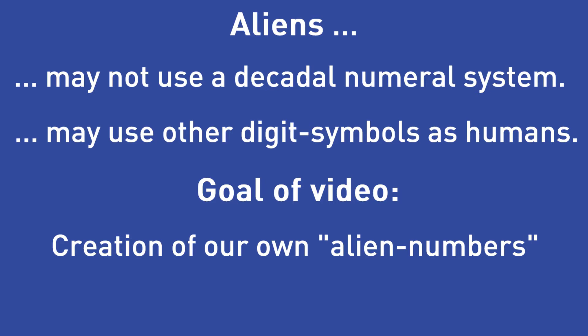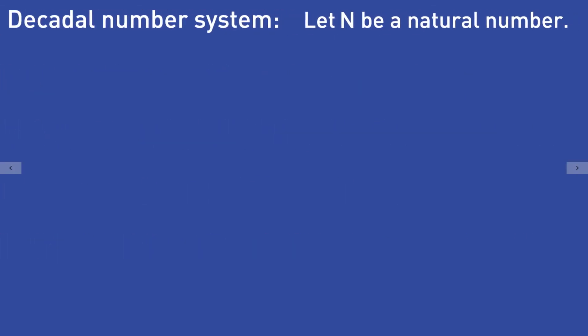The goal of this video will be to create our own alien numbers. Instead of using the decadal number system, we will write down numbers using a base 5 numeral system. Furthermore, we will introduce new alien symbols for the digits of that numeral system. In the end, I will show you an approach to add up two of these alien numbers. But first of all, we have to understand our usual decadal number system a little better.